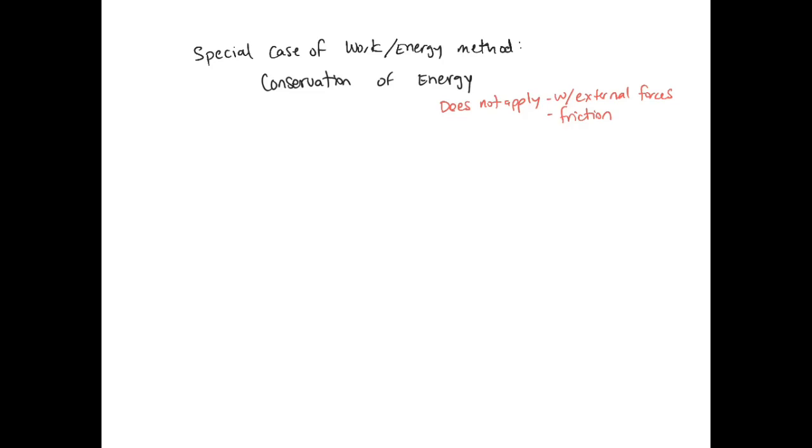So if you have a particle that moves under the action of only conservative forces, the principle of work and energy is simplified to T1 plus V1 is equal to T2 plus V2. Notice there's no work from one to two term here because in the previous problem this term was capturing that friction and those external forces. If you don't have any of those external forces that are bleeding energy out of your system, then you can say that the dynamic energy before is equal to your dynamic energy after.